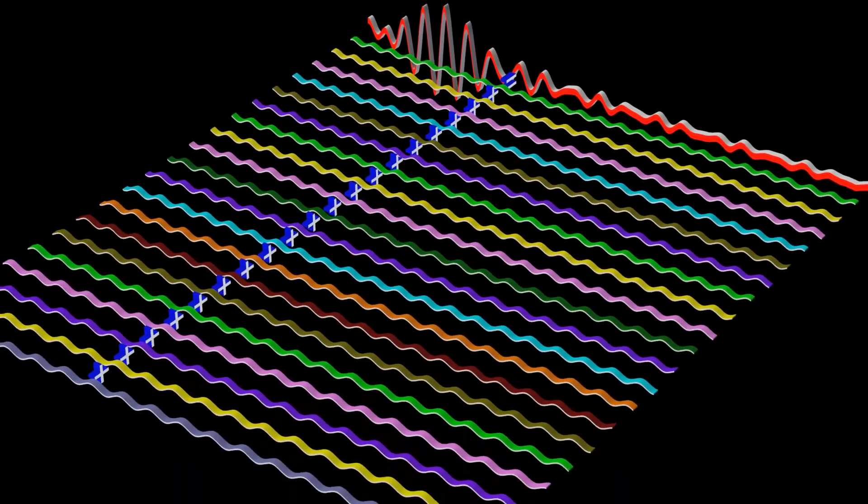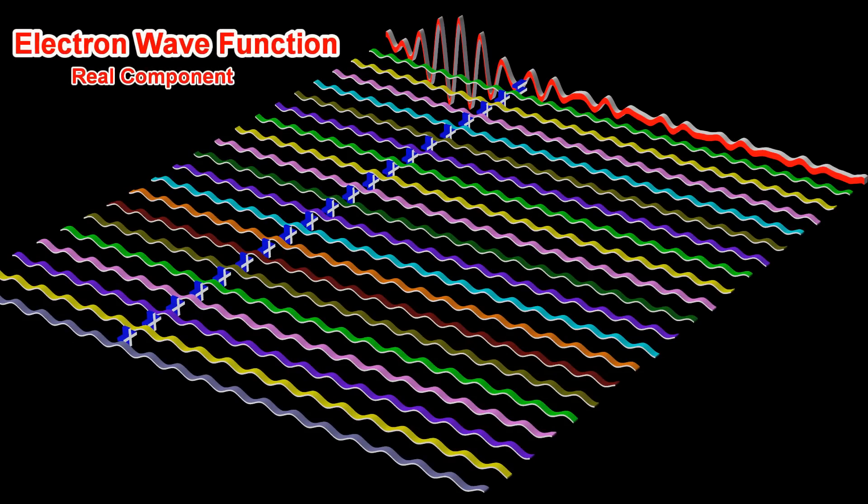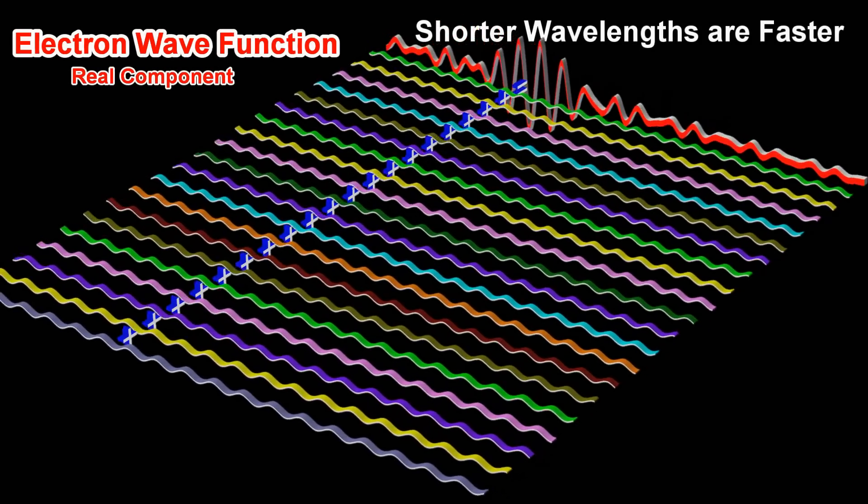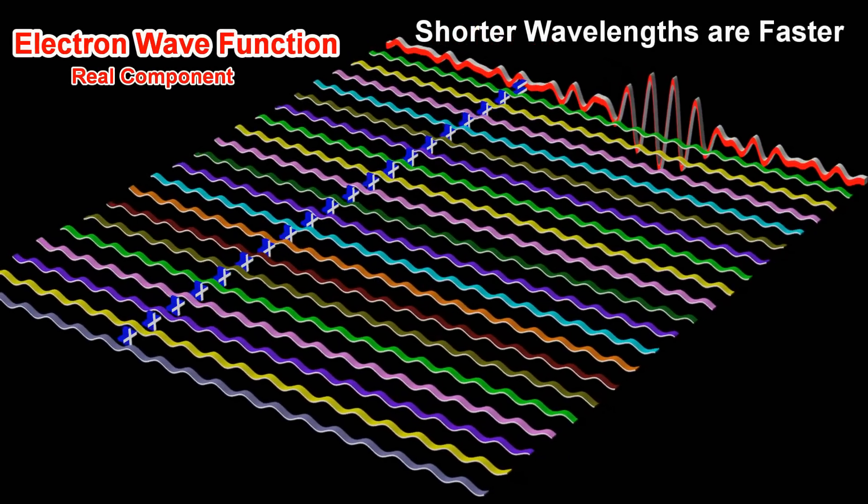For a quantum particle with mass, such as an electron, the waves with a shorter wavelength have a faster phase velocity.